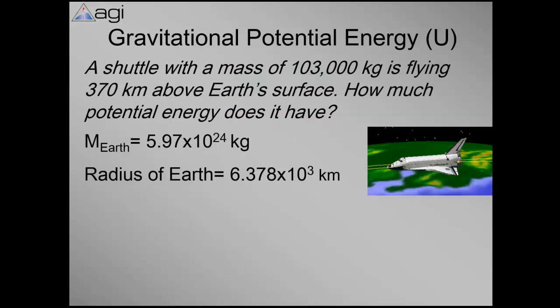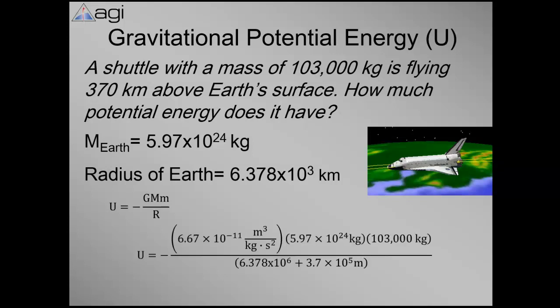So let's go through an example. Here it says a shuttle with a mass of 103,000 kilograms is flying 370 kilometers above the earth's surface. How much potential energy does it have? And we're given the mass of the earth and the radius of the earth. So we'll remember to get r in our equation, U equals minus GMm over R, that that R is the radius of the earth plus the altitude, and that the little m is the mass of the satellite.